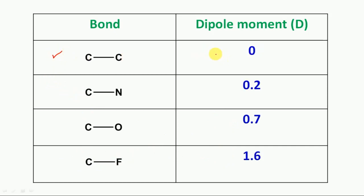Next, the CC bond has a dipole moment of 0. The CN bond is 0.2, the CO bond is 0.7, and the CF bond is 1.6.